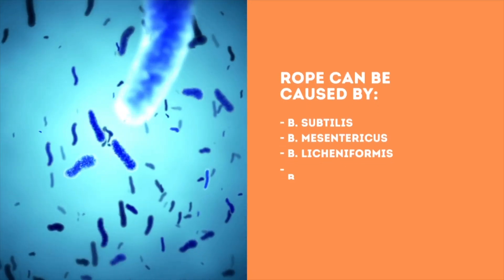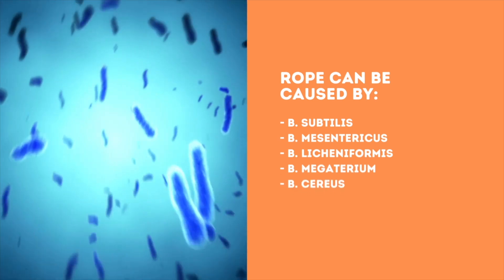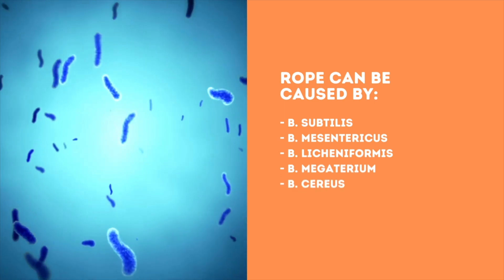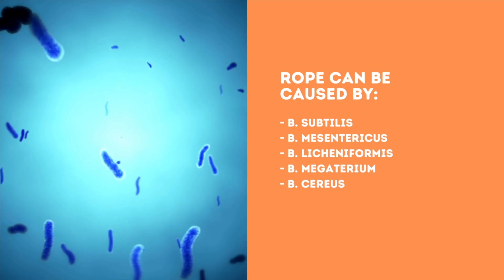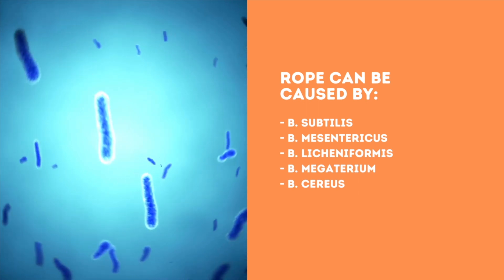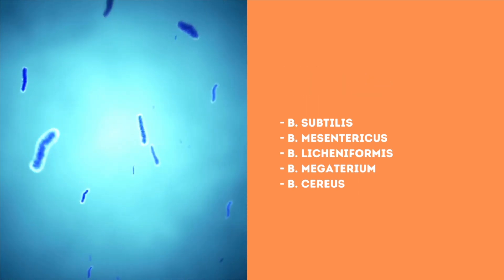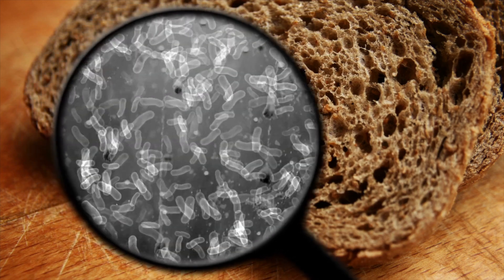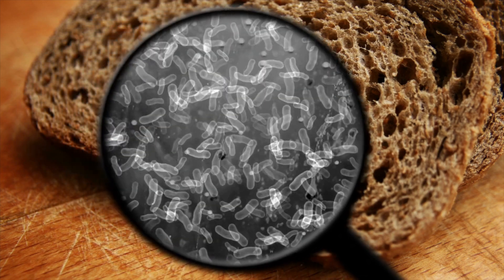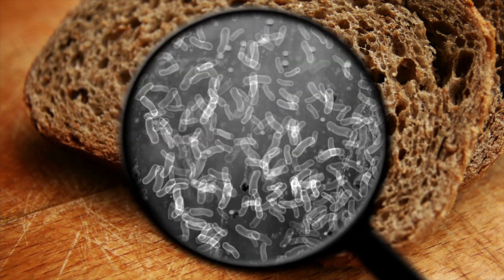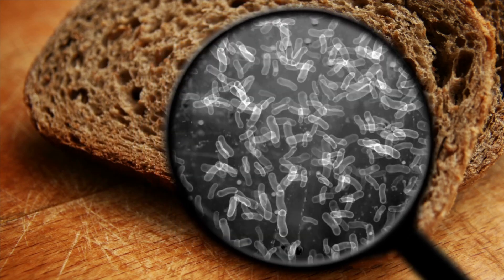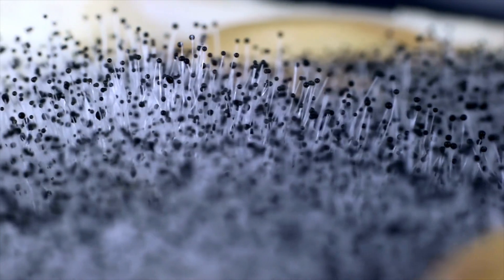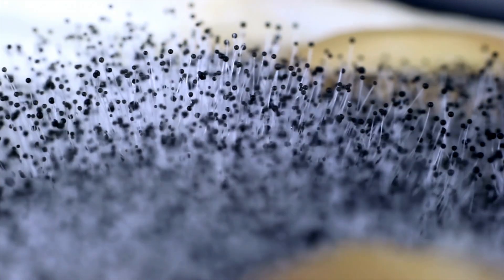Rope in bread is primarily caused by B. subtilis and B. mesentericus. However, B. licheniformis, B. megaterium, and B. cereus are also capable of causing rope. B. subtilis is a gram-positive, aerobic, spore-forming soil bacterium found in soil, dust, water, and even air.